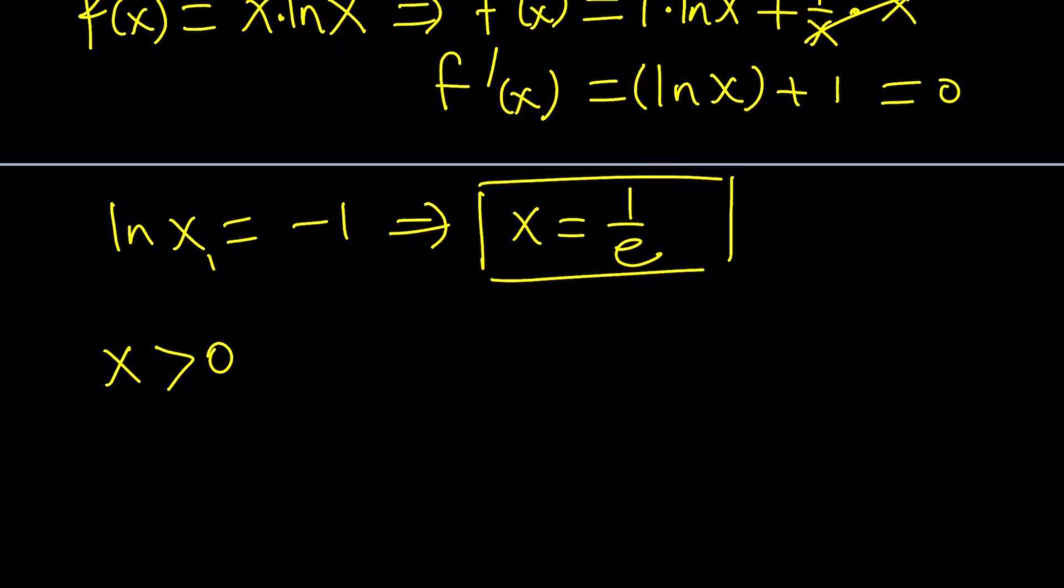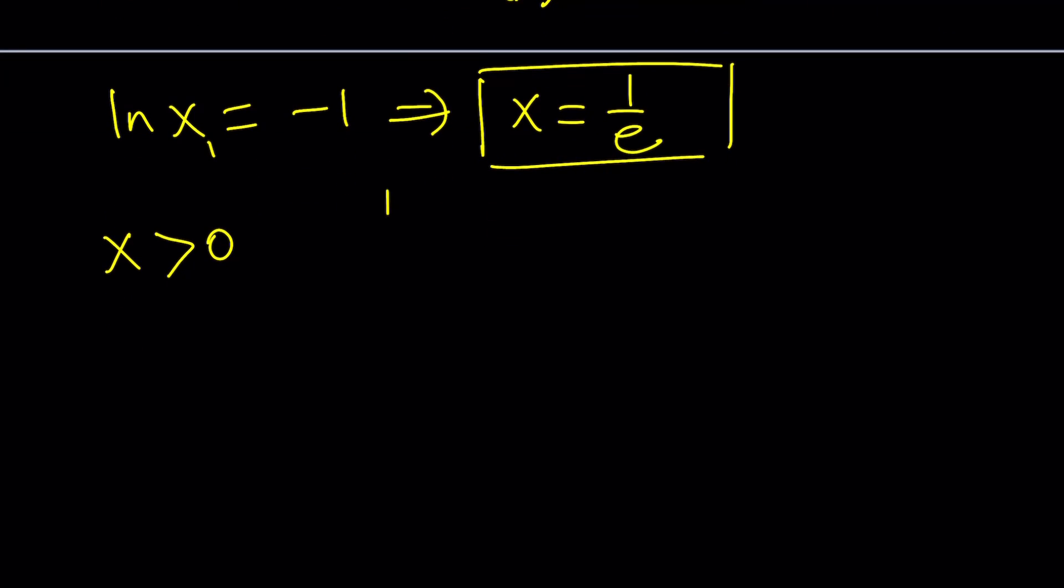Of course, we're looking for real values here, even though complex values may well be defined. Or are they well defined? I don't know. Anyways, let's make a table using this critical point. Almost always, I make the same type of table, so you should be familiar. Our rows are x, f prime, and f. And then we put the critical value of x here, which is 1 over e. And I put a little 0, meaning that 1 over e makes the derivative 0.